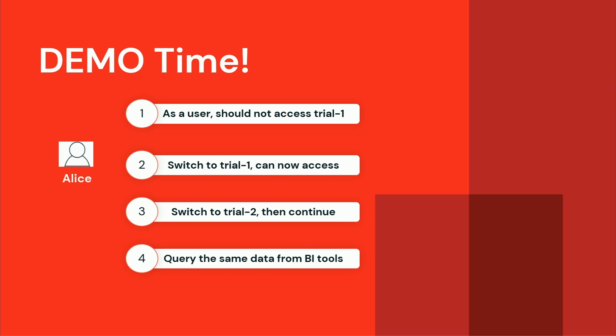Thank you so much. It's exciting to see all this attention after lunch. Hopefully the applause will continue after the demo. So Stefania walked you through a very new paradigm. We're excited to introduce a set of features in Unity Catalog for fine-grained access control. Since we're short on time, I'm going to jump straight into a specific use case. The demo will go through four steps: we'll log in as ourselves and see what we can access; then switch to working on trial one; then switch to trial two; and then see how you get insights even when using third-party BI tools such as Tableau.